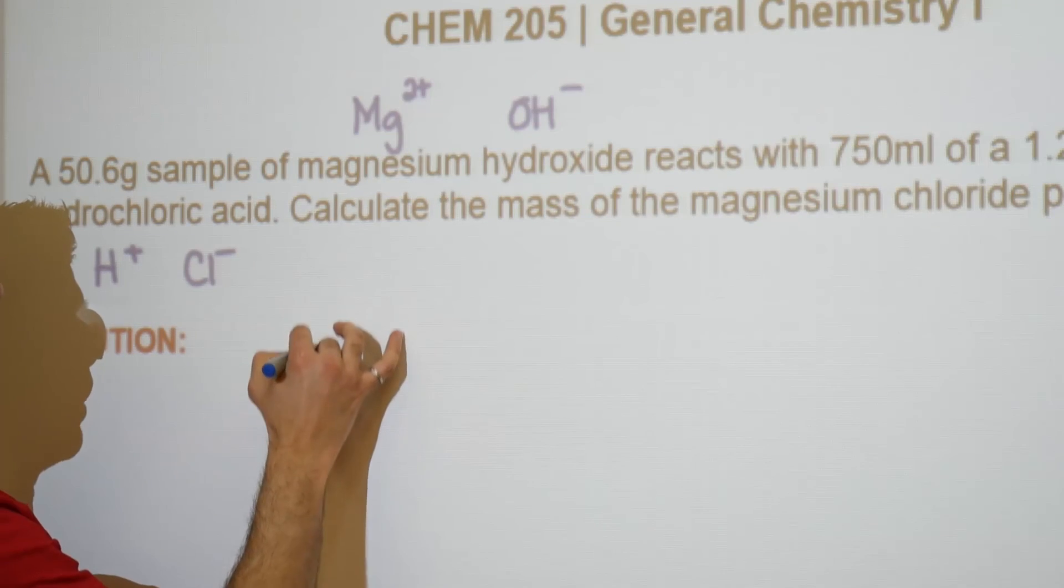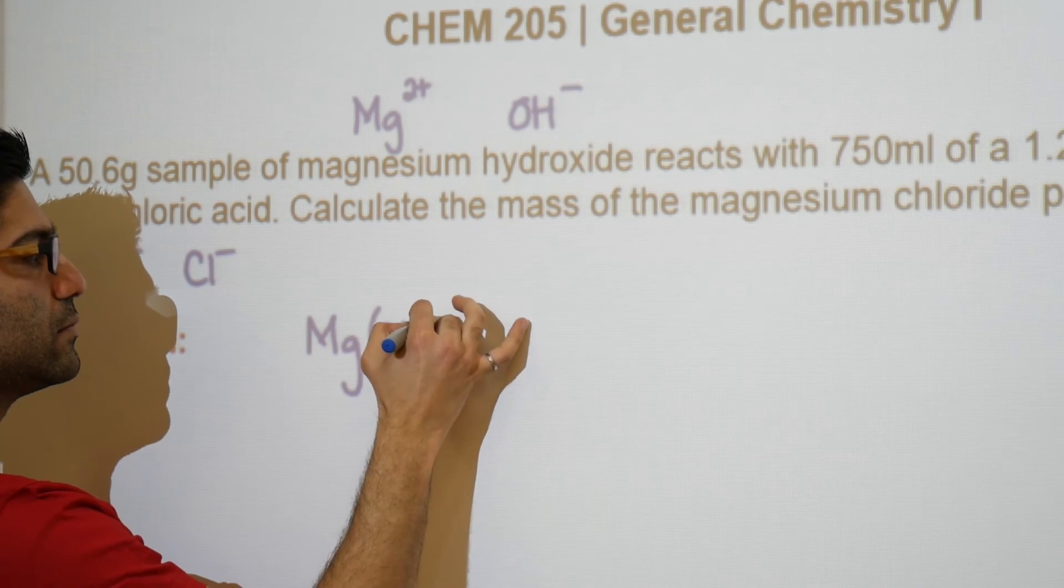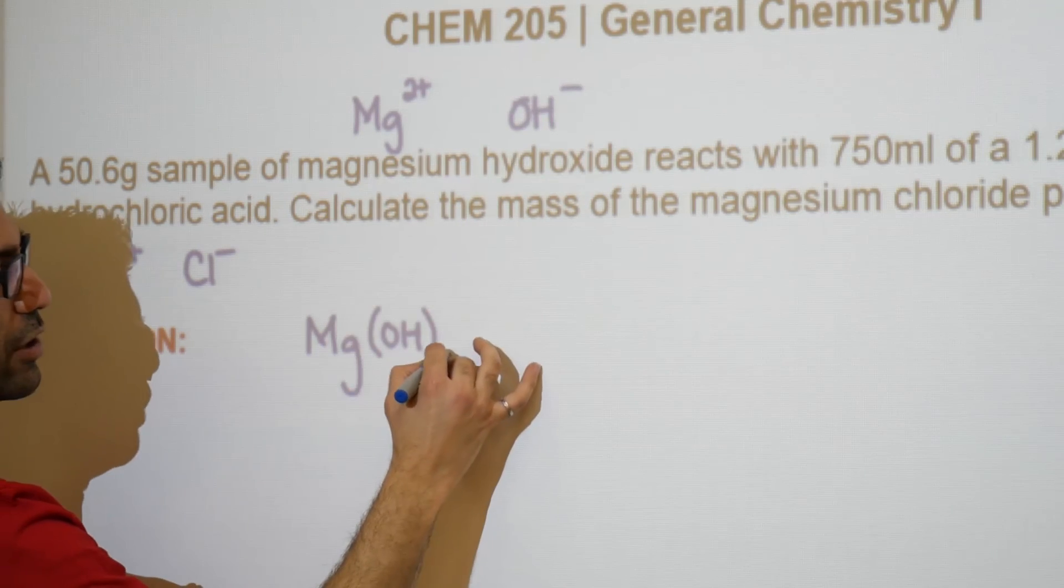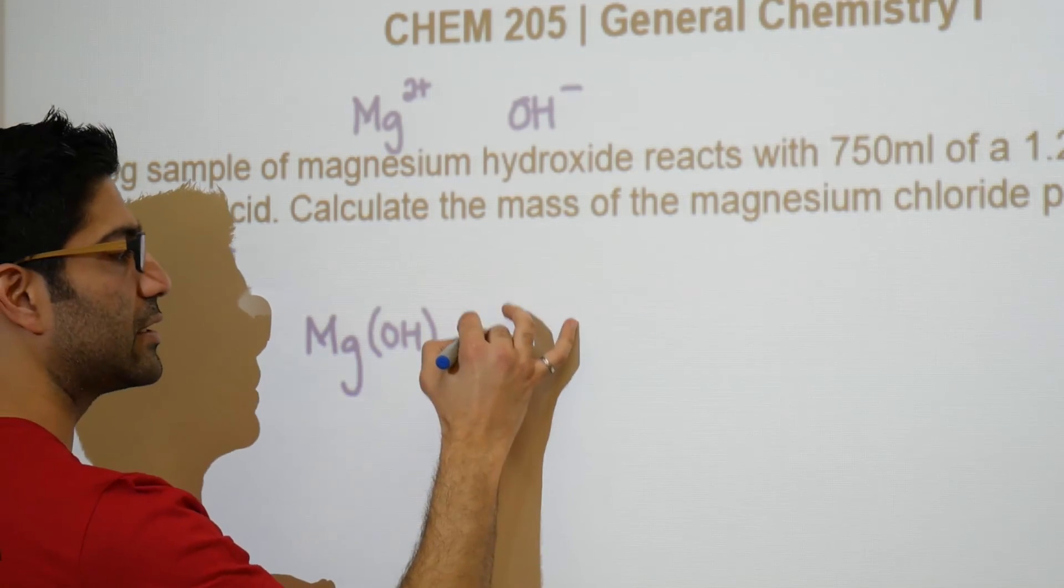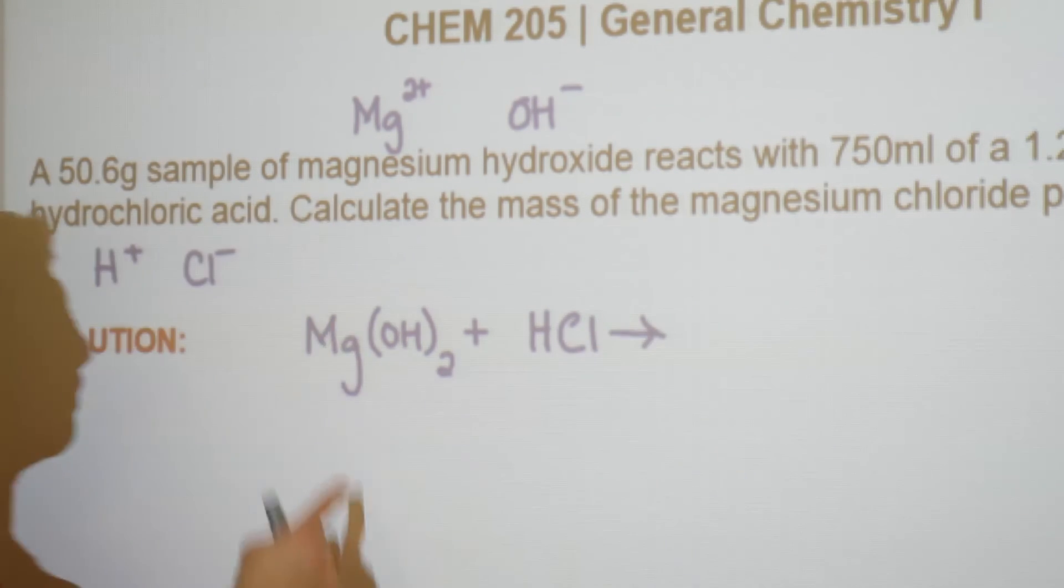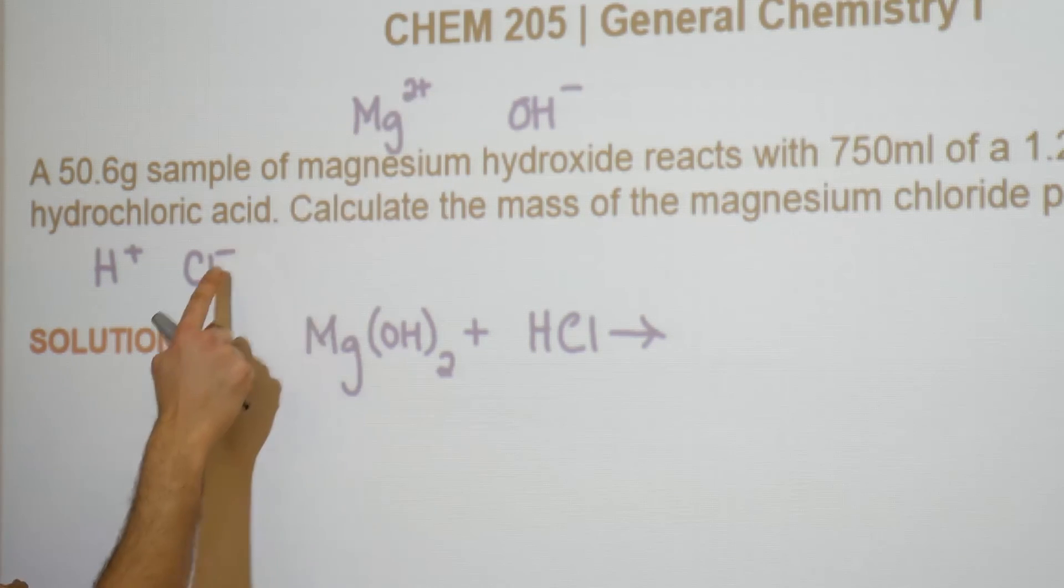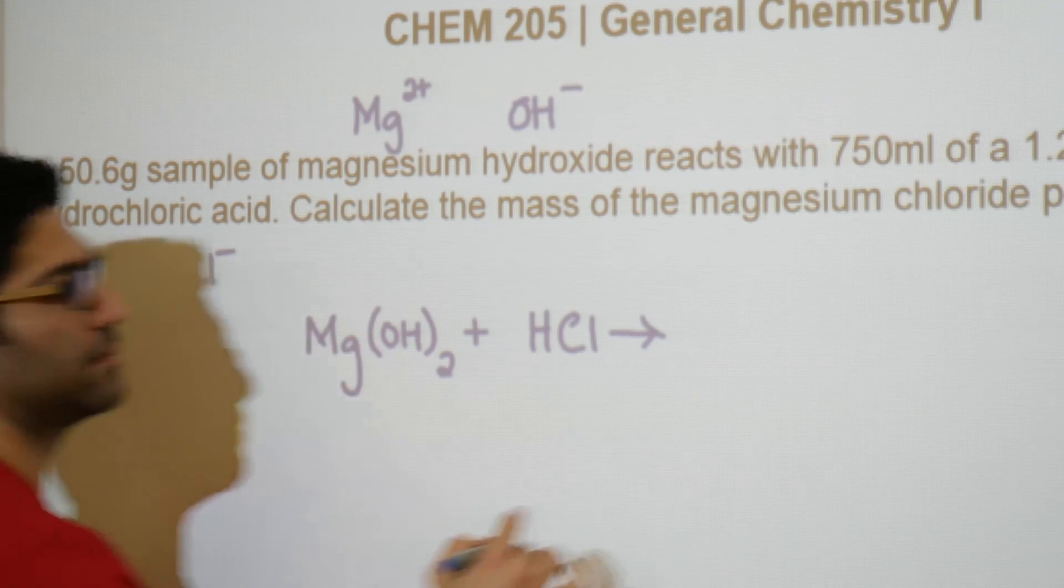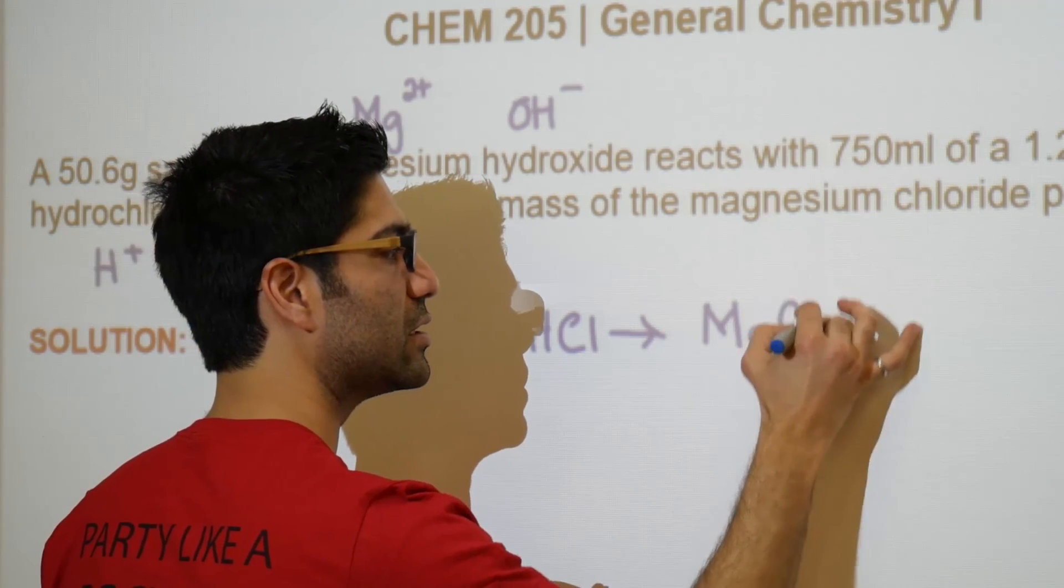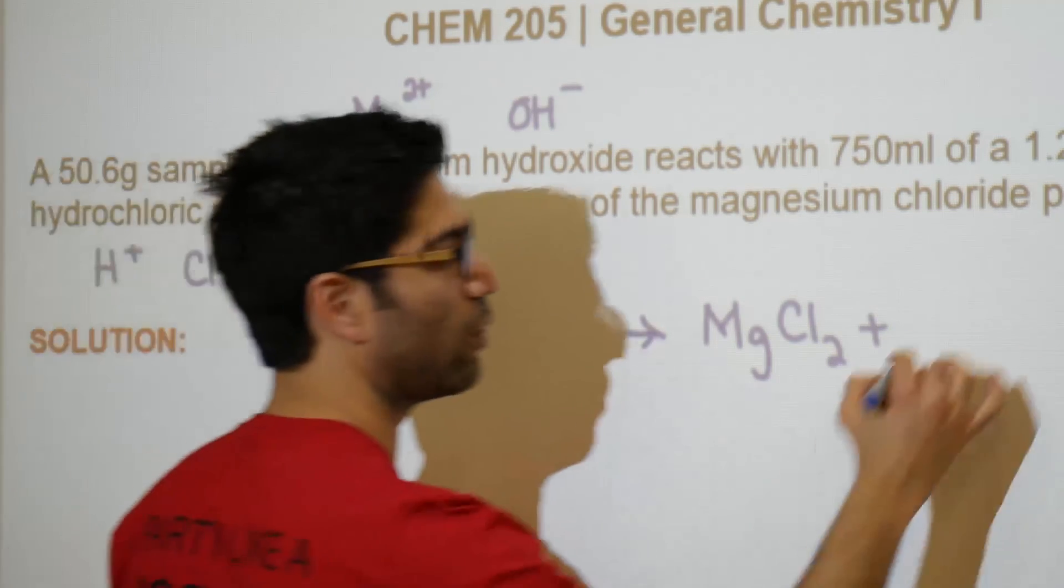Our reaction is going to look like this. We have magnesium hydroxide, so the two is going to go down there. The one will come here. This is how you make the formula. Plus hydrochloric acid, and this is going to give us—the positive ion here will combine with a negative ion here. So the two will go to the chlorine and the one will come to the magnesium, giving us MgCl2 plus of course H and OH are going to make water.